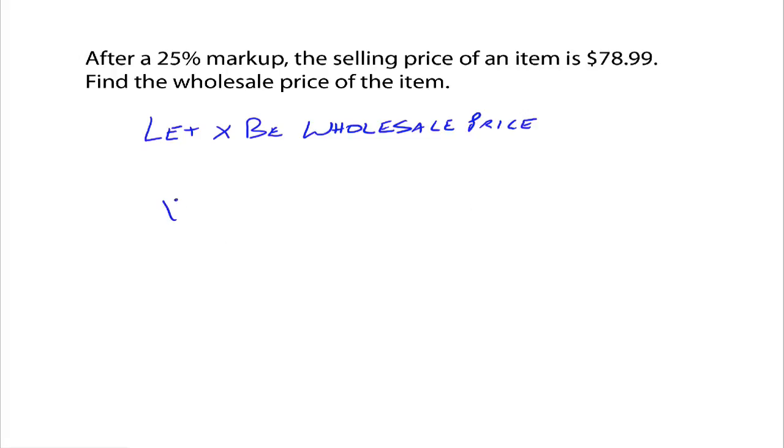We have the wholesale price, X, plus the percent markup, which is 25%—change that to a decimal, 0.25—times the wholesale price. That's X again. There's the percent markup times the wholesale price, and that right there, 0.25X, is called the markup. And that is equal to the selling price of $78.99. Combine like terms: X plus 0.25X gives 1.25X equals $78.99. Divide both sides by 1.25, and you get $63.19.